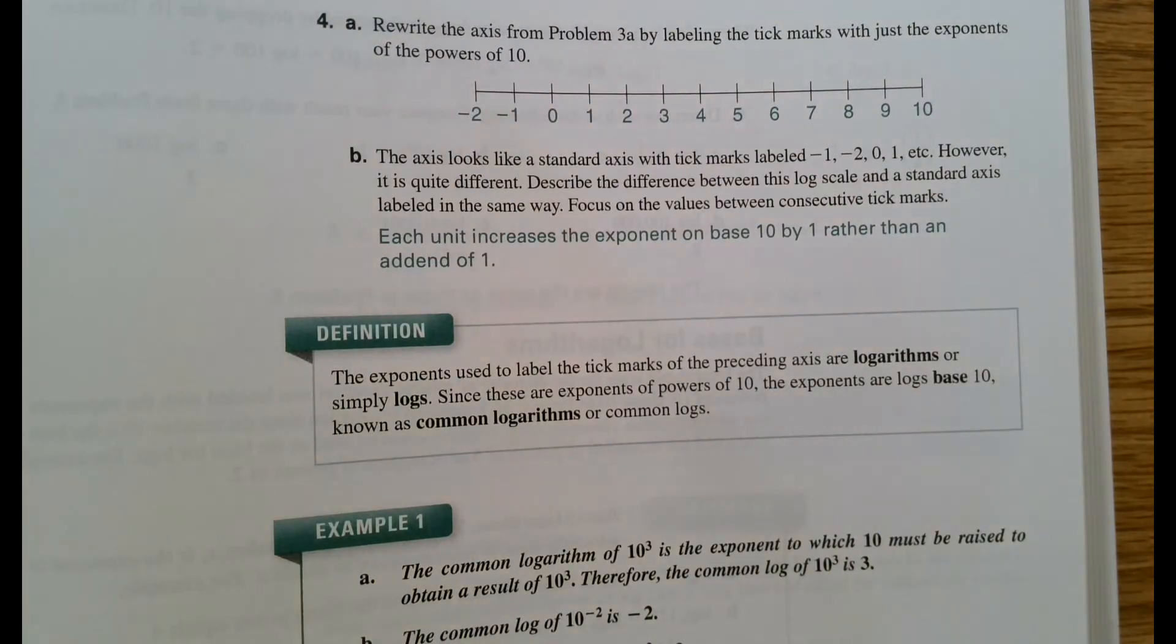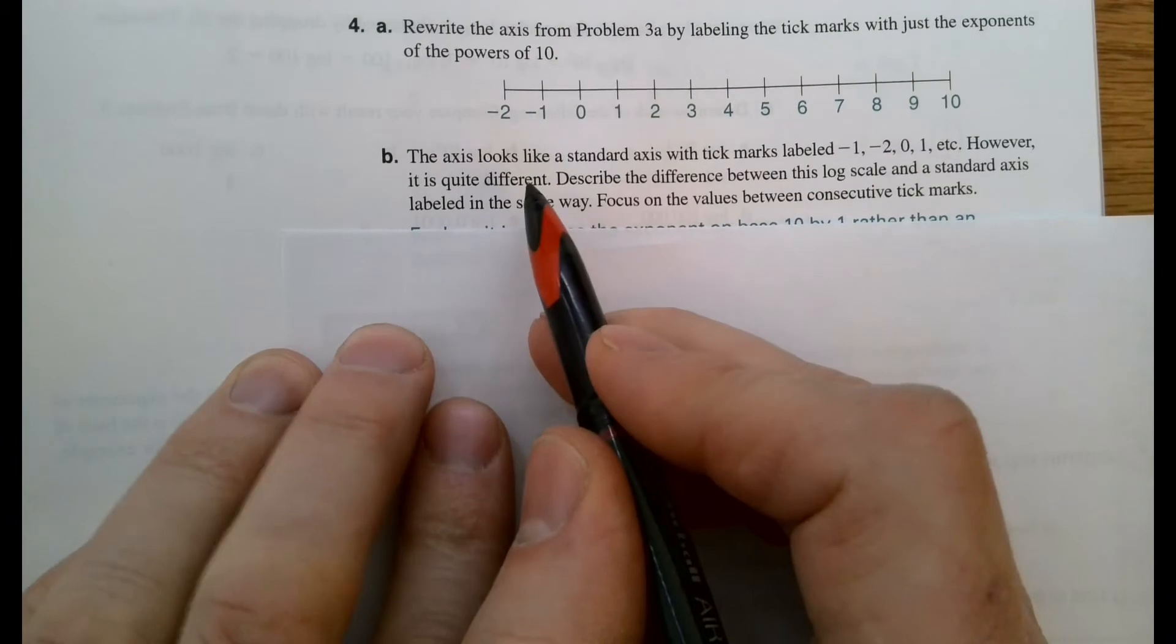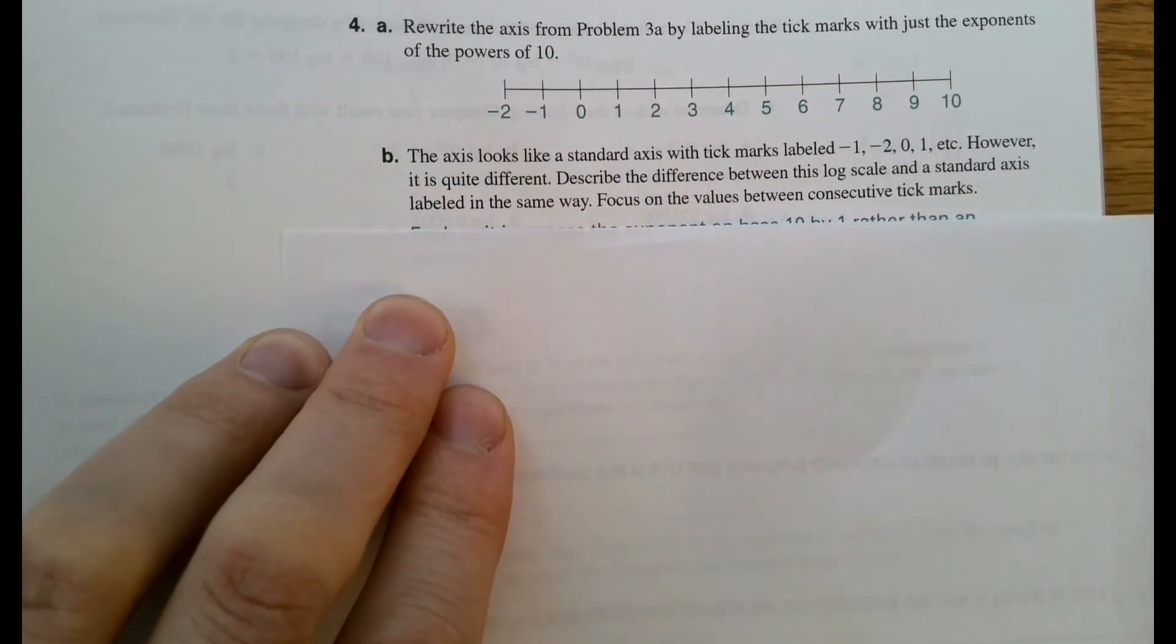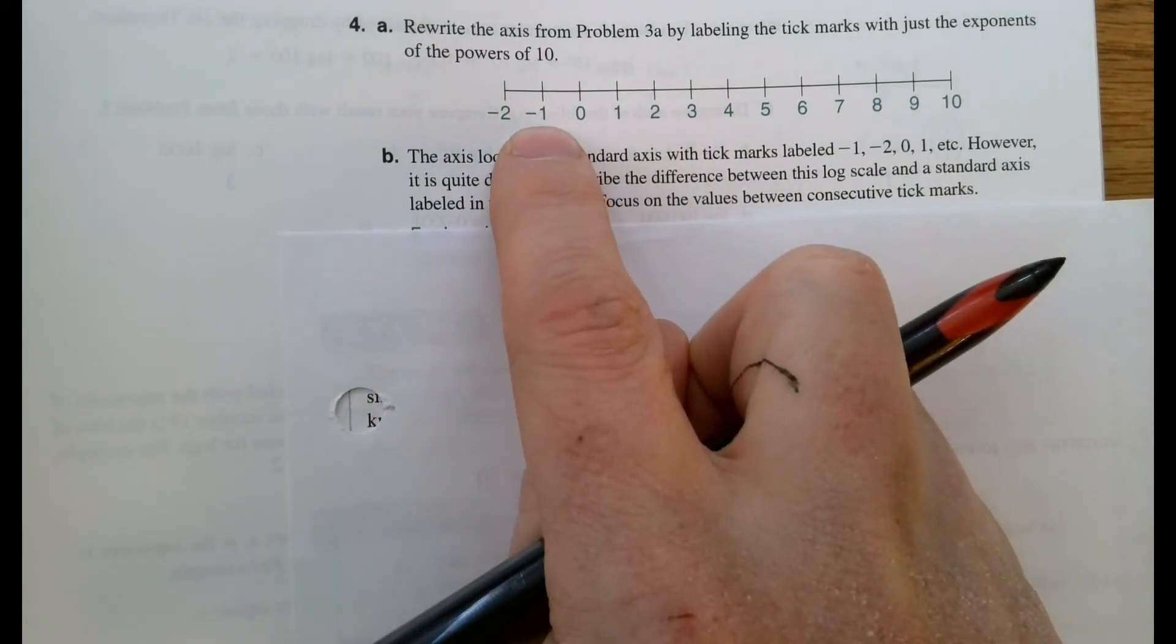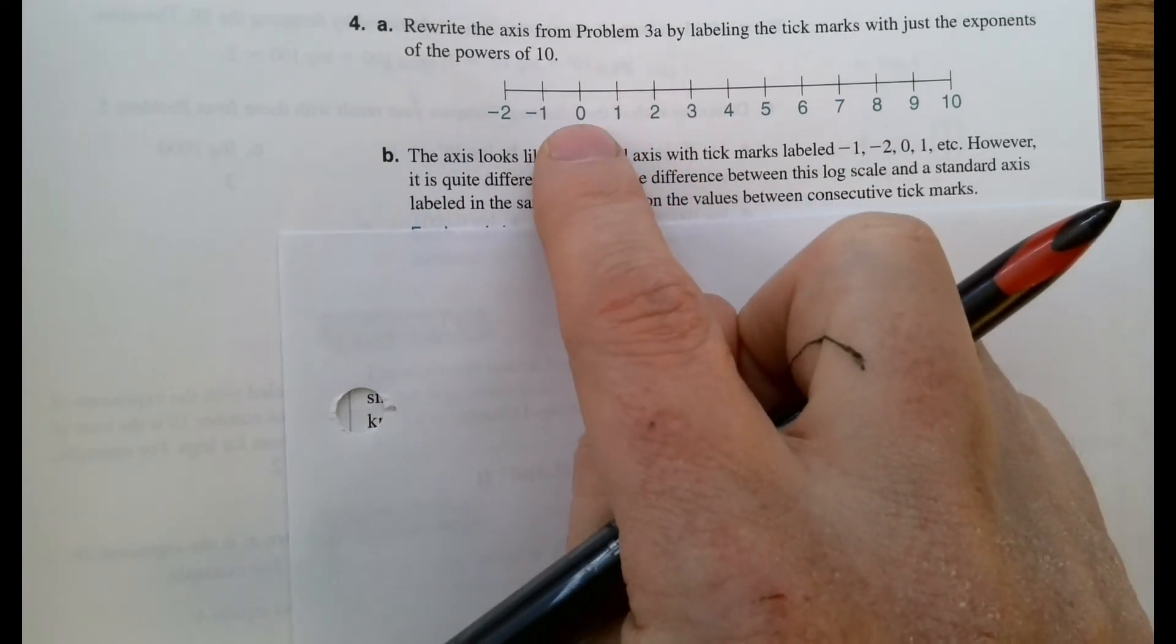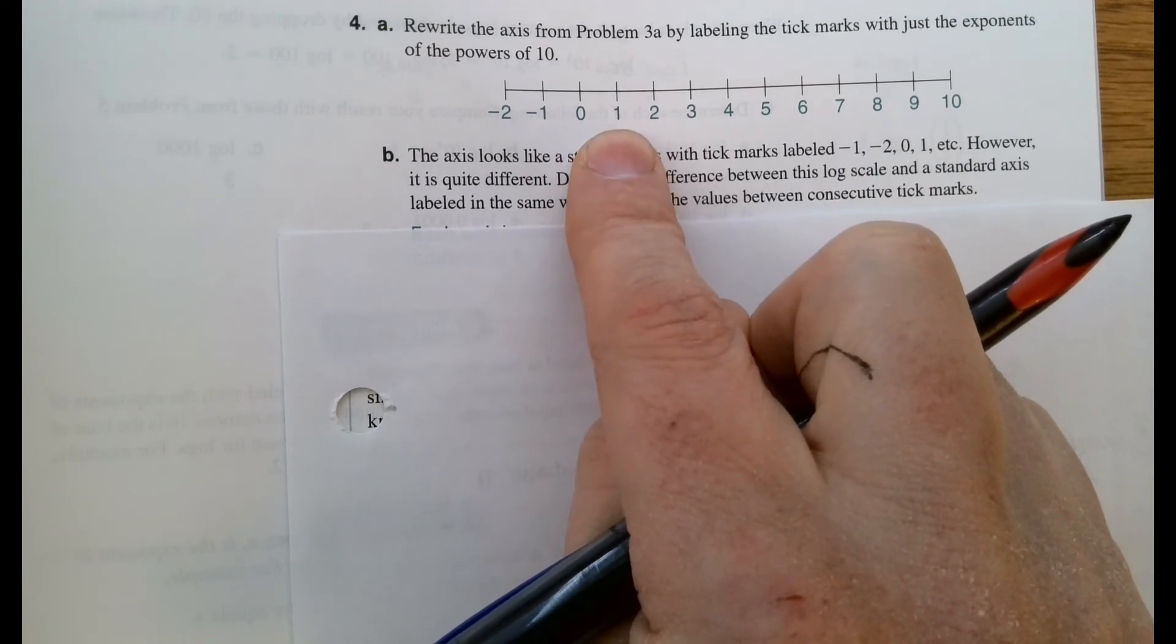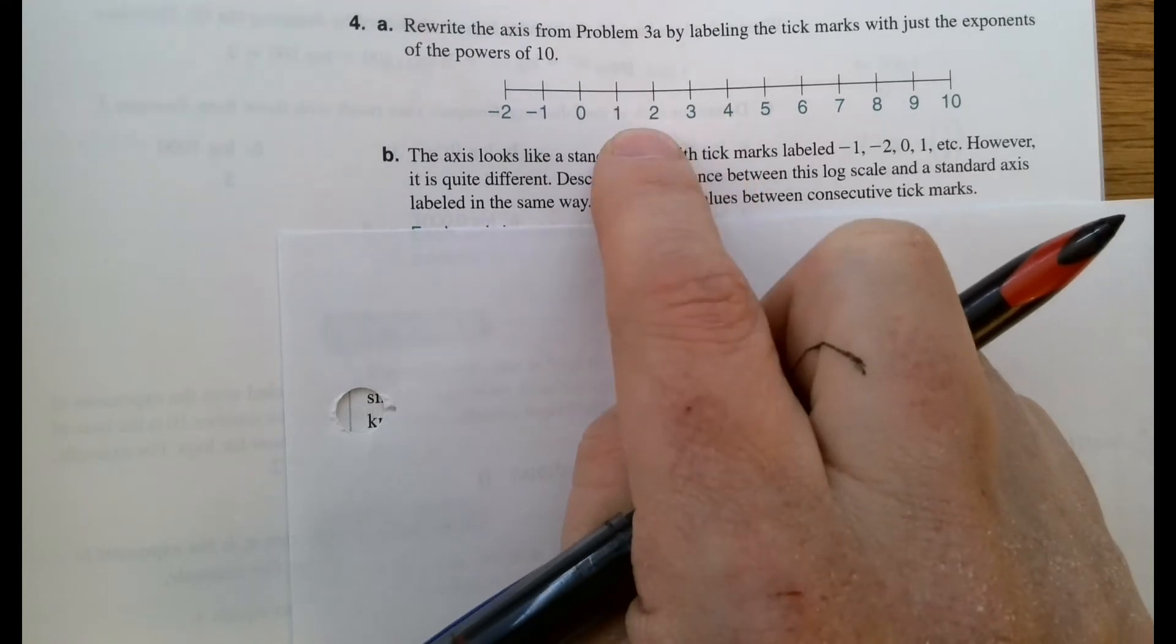So the issue with this is they look exactly the same, right? So the axes look like a standard axis with tick marks labeled from negative 1 to 0. However, it's quite different because the amount of units between these are powers of 10. So when I march from 0 to 1, I've actually gone 10 steps. I went from 10 to the 0, being 1, to 10 to the 1, being 10.